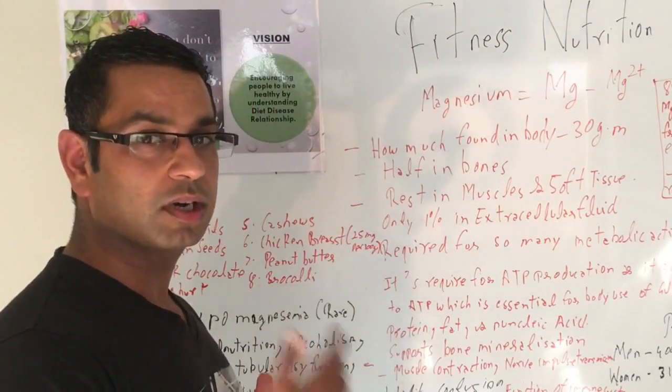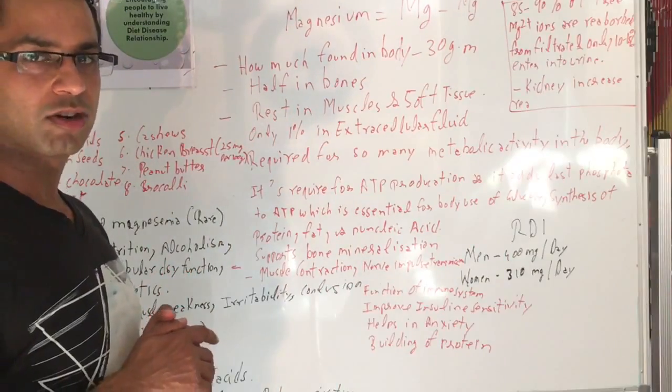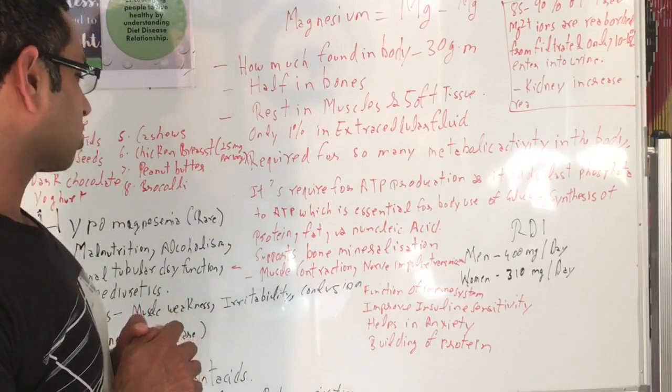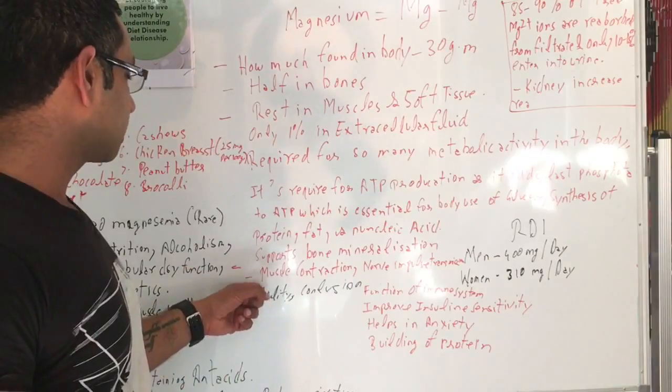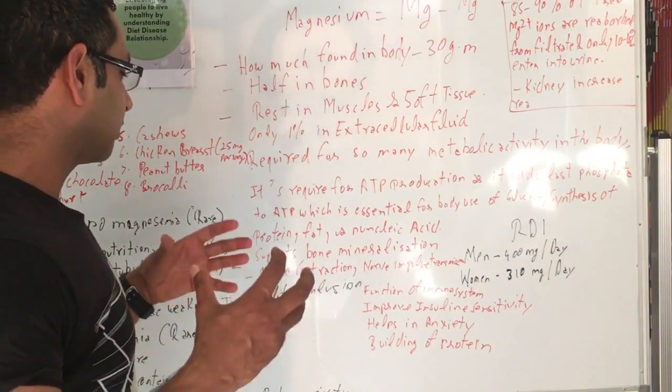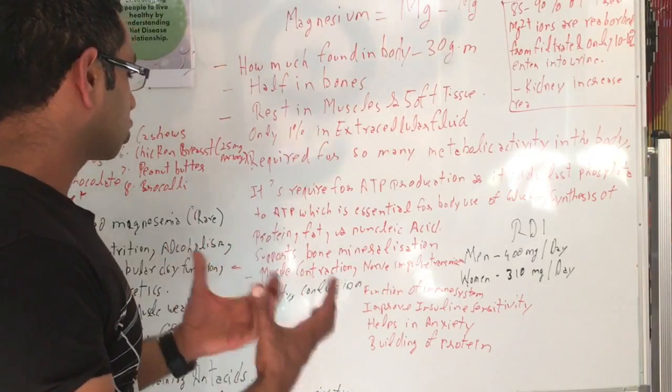Another one - it's very important along with calcium and phosphorus for the bone. It forces bone mineralization. Next is muscle contraction and nerve impulse transmission. It acts in the cell membrane and helps along with calcium and potassium to contract the muscle and for nerve impulse transmission.